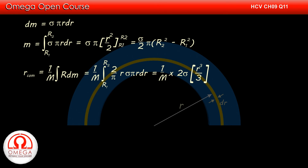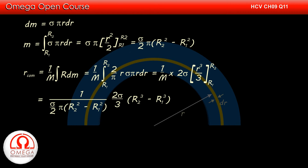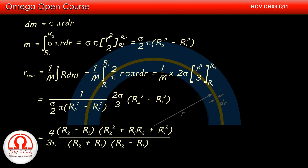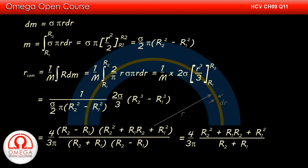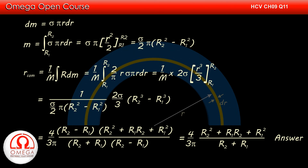So the vertical distance of the center of mass of the plate from the center is (1/m) times the integration of (2/pi)·r·sigma·pi·r·dr from R1 to R2. Integrating, we get (1/m) times 2·sigma times r³/3 evaluated from R1 to R2. Putting the value of m and the limits, we get the distance as [1 / ((sigma/2)·pi·(R2²−R1²))] times (2·sigma/3)·(R2³−R1³). Sigma cancels from numerator and denominator. Writing R2³−R1³ = (R2−R1)(R2²+R1·R2+R1²) and R2²−R1² = (R2+R1)(R2−R1), and simplifying, we get the distance of the center of mass from the center as (4/3π)·(R2²+R1·R2+R1²)/(R1+R2). This is our answer.